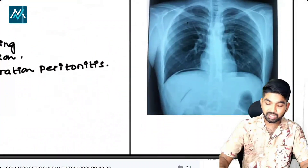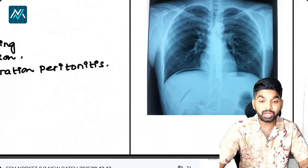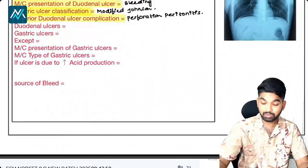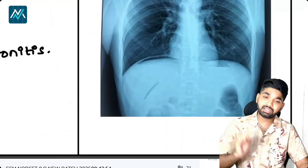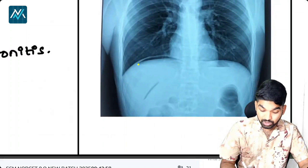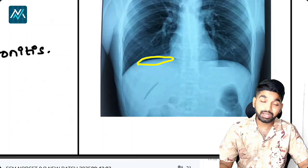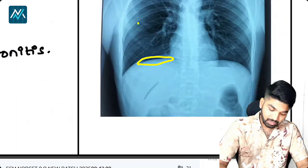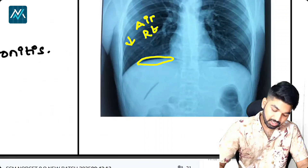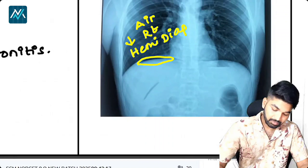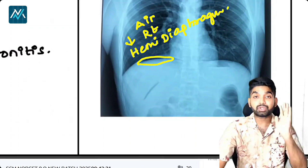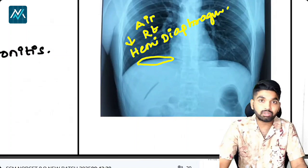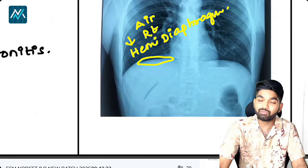They gave a beautiful X-ray and asked how to identify perforation peritonitis. When you see this X-ray, look for a dark area under the right side of the diaphragm — this is air getting collected under the right hemi-diaphragm. This is a very classical sign. You can immediately say this patient has perforation peritonitis; immediate laparotomy needs to be done, otherwise there is increased risk of mortality.